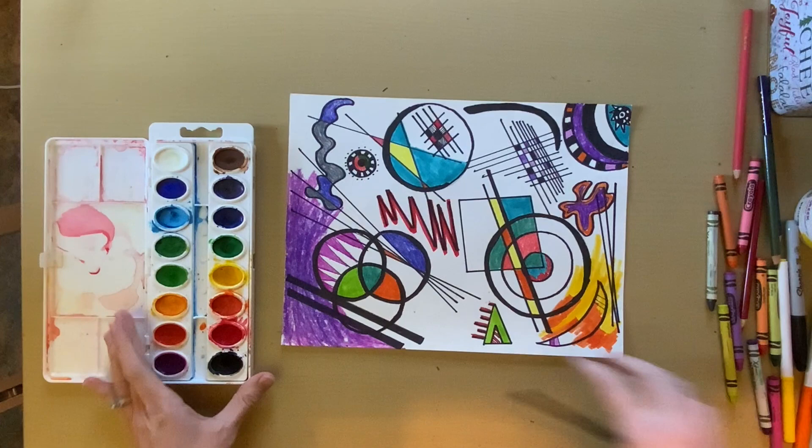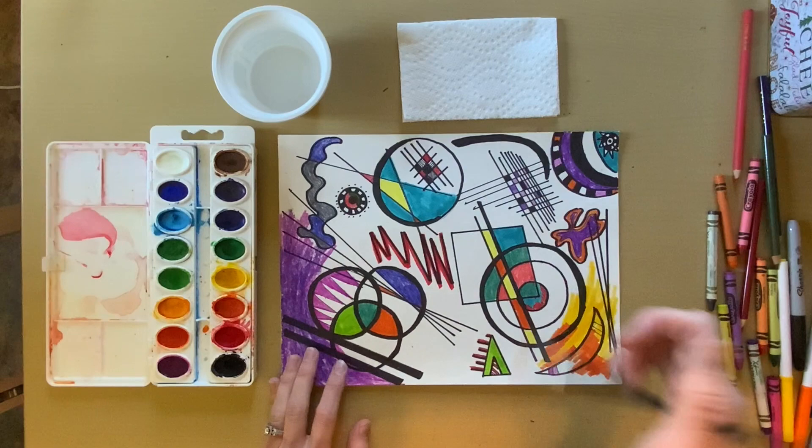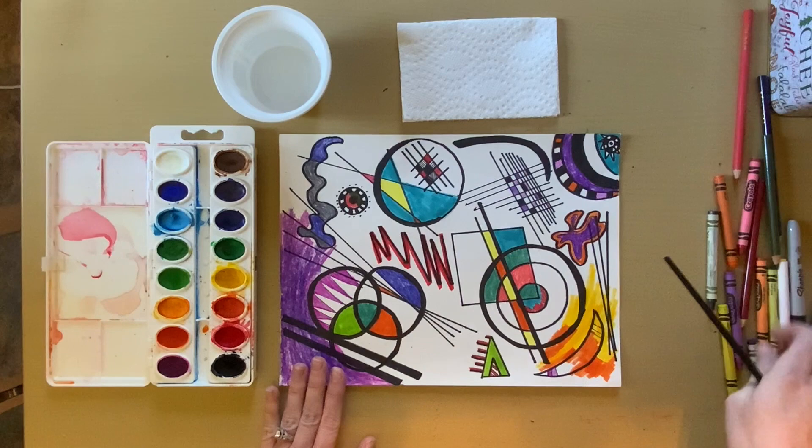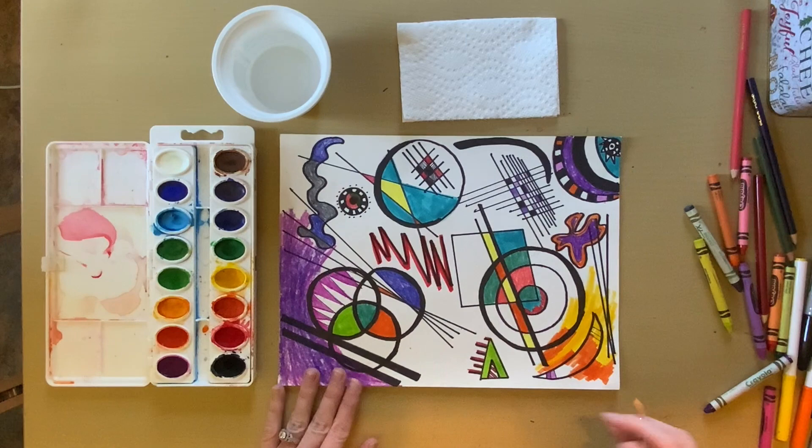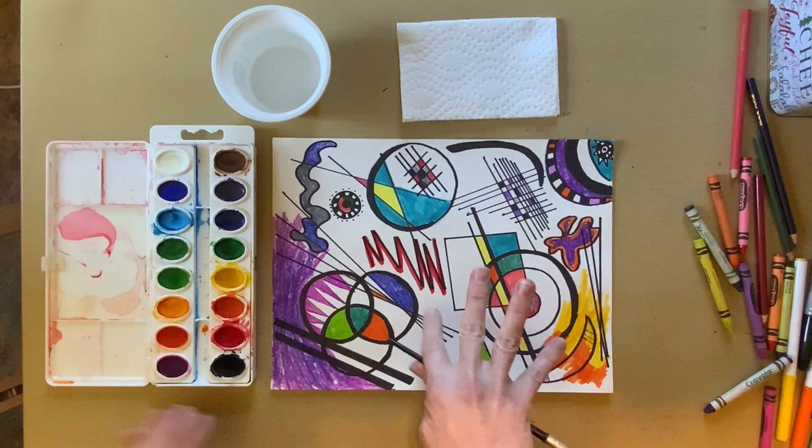And also the students at school, if you just want to do all your details with whatever you're coloring with in school, and then when you get home, you can add some color with your paint. You can do that too. But here, with the watercolor, I'm just going to paint over some of the white spots. You can leave a lot of white, like Kandinsky left a lot of white in his paintings, but I'm just going to dip my paintbrush in water.